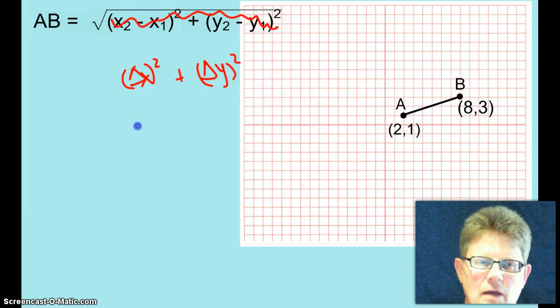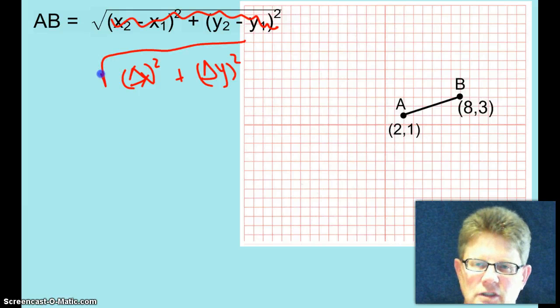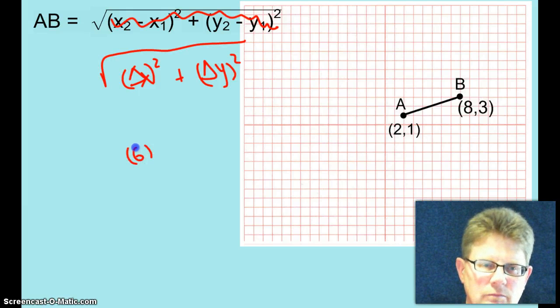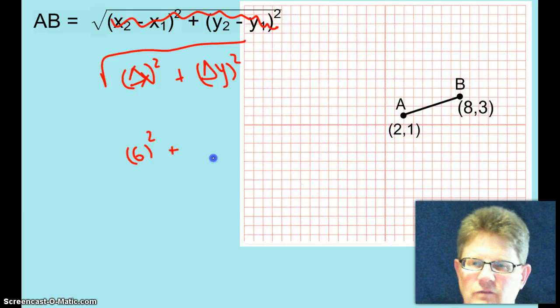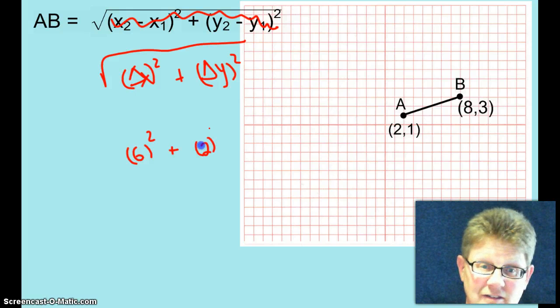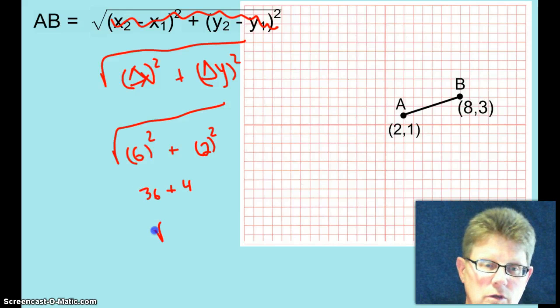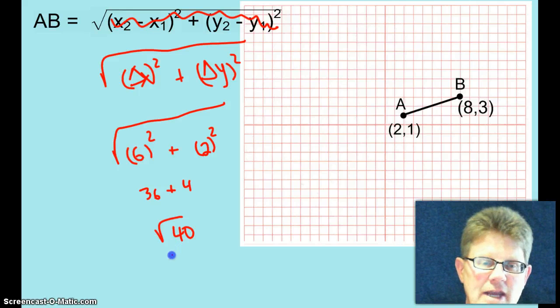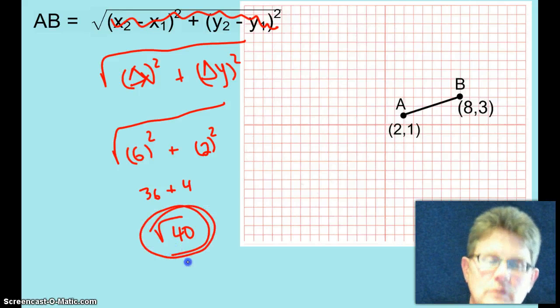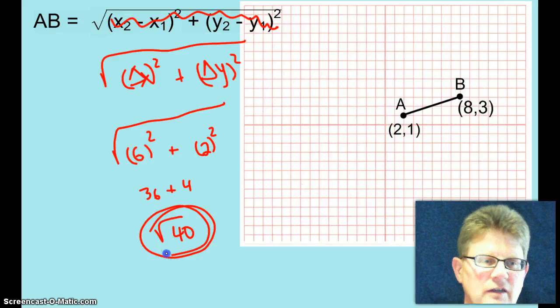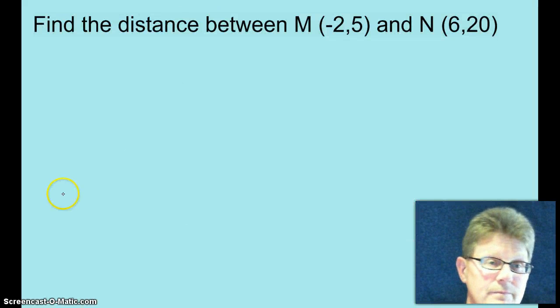All right, to go from 2 to 8, how much did the X's change? From 2 to 8, it changed 6. And then from 1 to 3, how much did it change? 2, yes. See, isn't that a whole lot better? So 36 plus 4, root 40. And right now, I just want you to leave it at that. Later on, when we get into chapter 7 in March, we'll talk about how to simplify that.